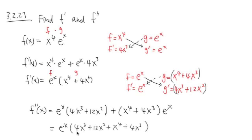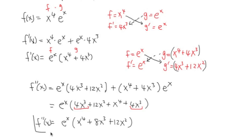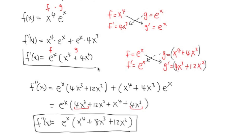Once again I see I have e to the x, so I can factor out e to the x all the way to the front. Let's write the polynomial in decreasing order: x to the fourth power, plus 4x to the third plus 4x to the third — that's a total of 8x to the third power — and plus 12x squared. So this will be the second derivative of f. This is the final result, and earlier that was the first derivative. And we are done.